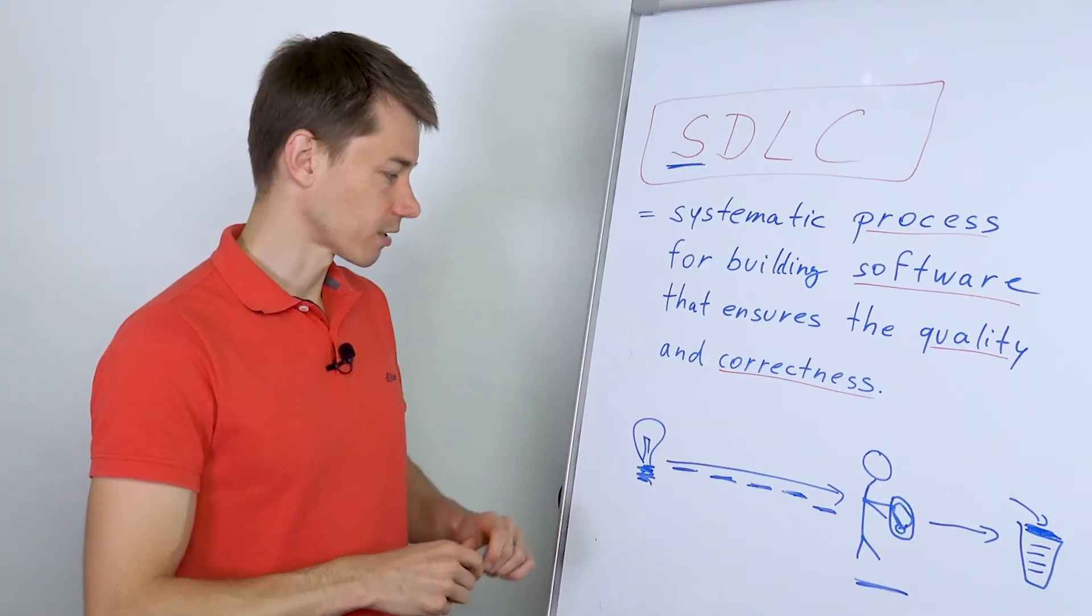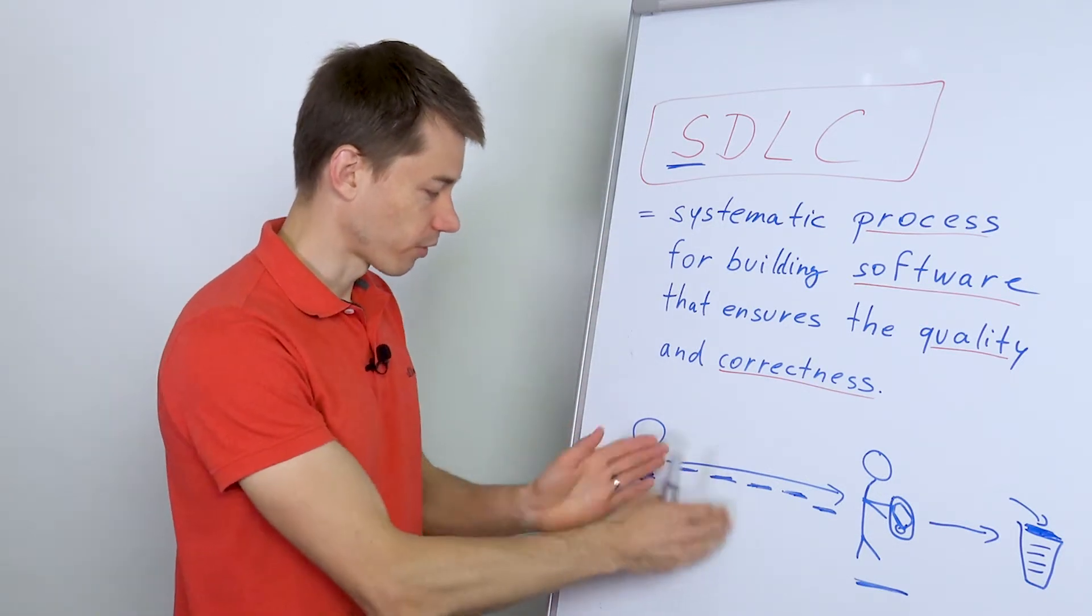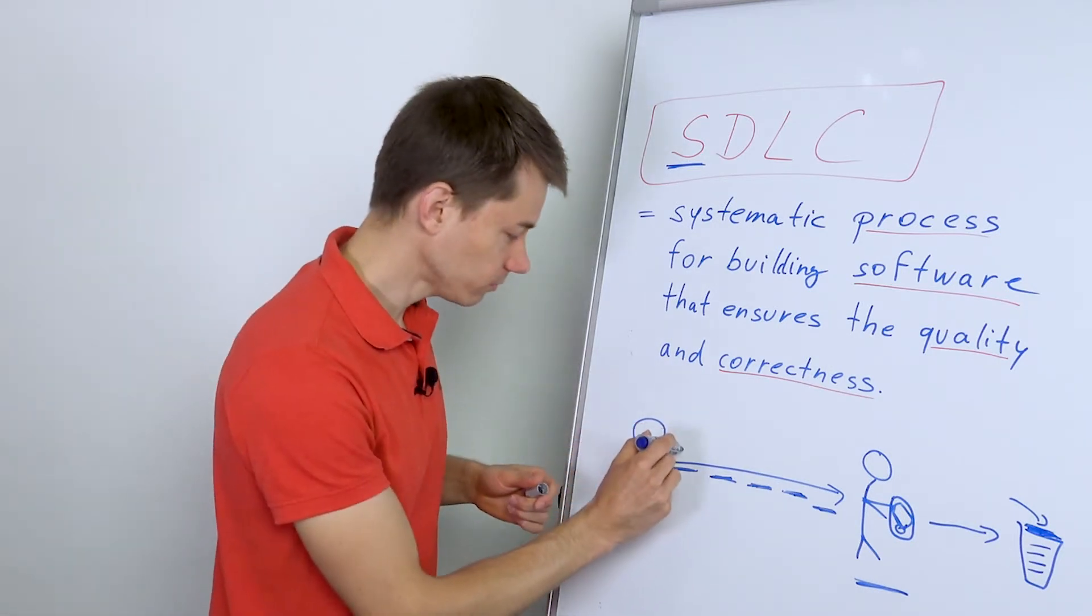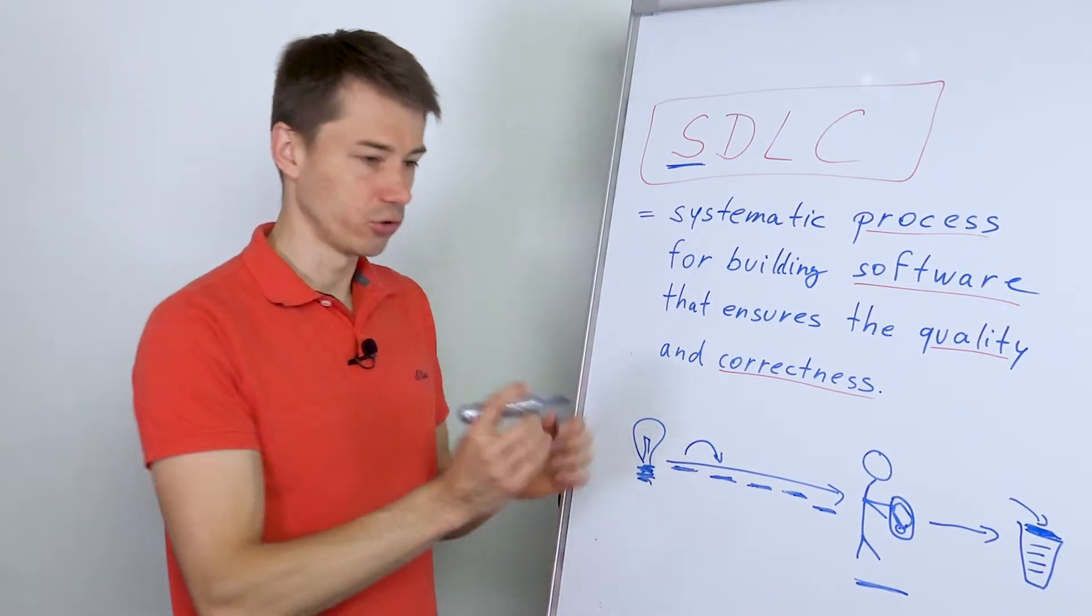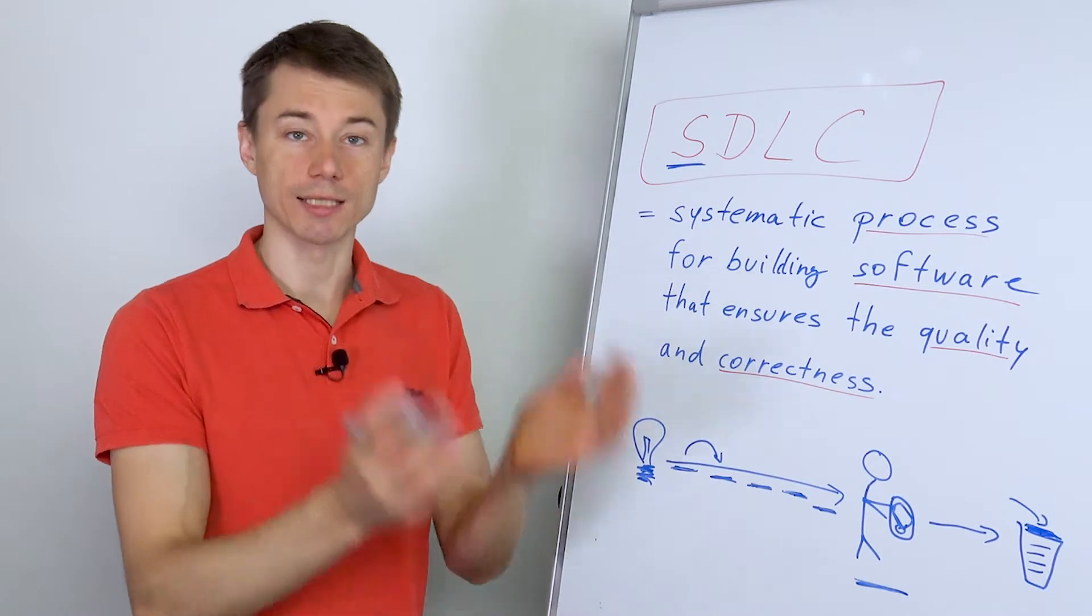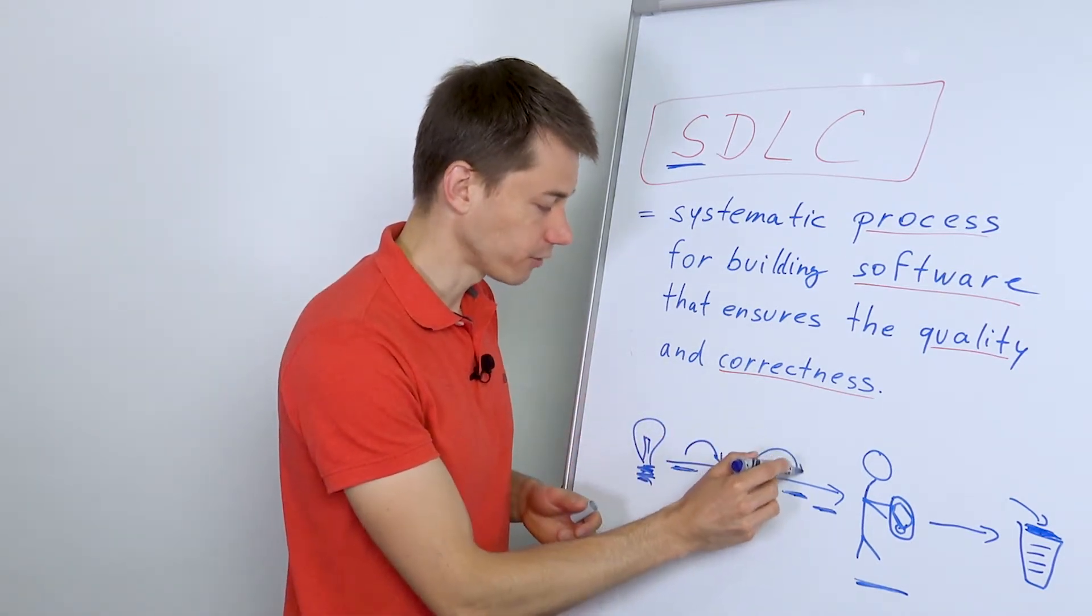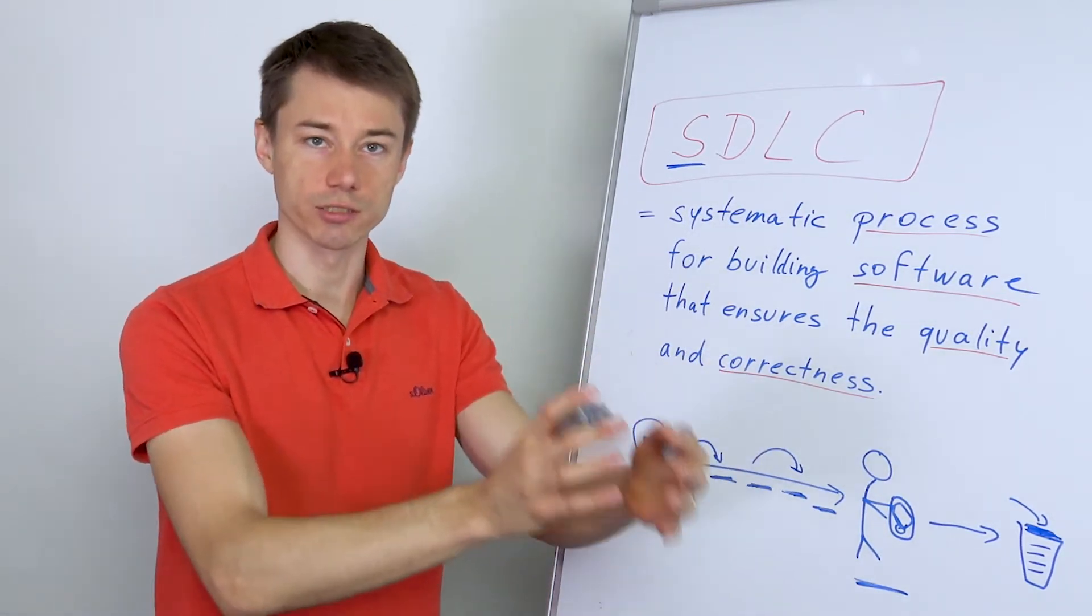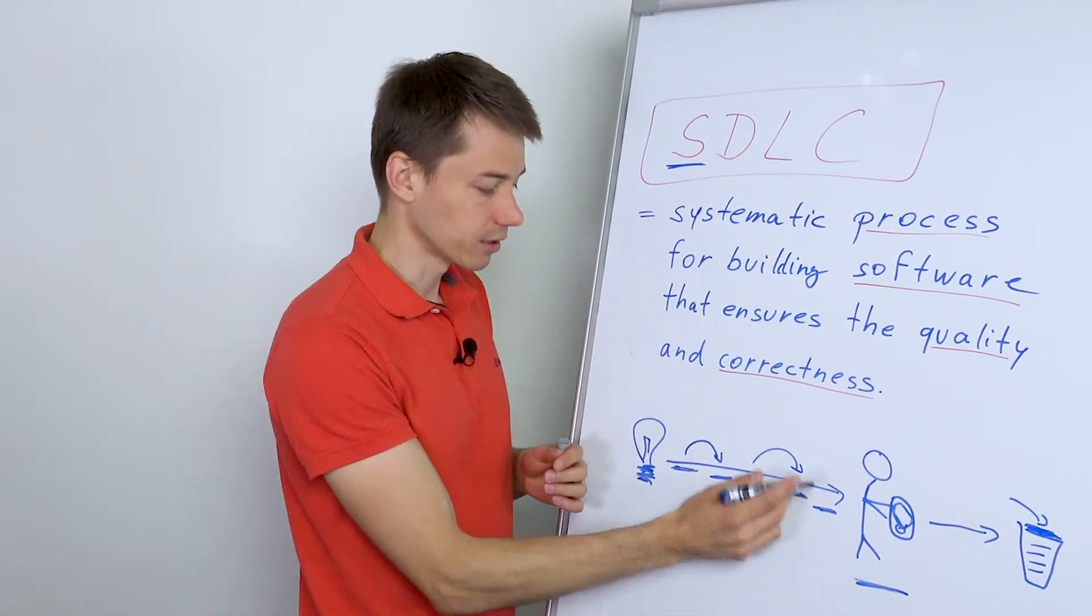So this is what the software development lifecycle talks about - the different stages and their deliverables. Each stage has some deliverable. If here is an idea, you need to describe the idea. Then you analyze it, so you have a document analyzing the system. Then you have a coding phase where you produce the code and give it to testers to test.